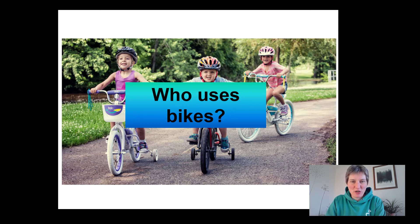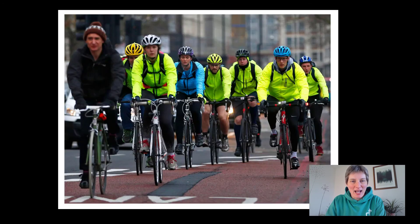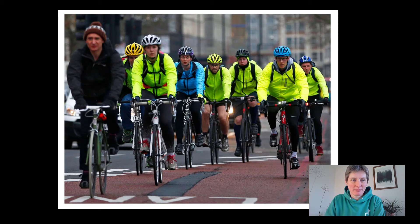But there are lots of other people who use bikes too. There's another group — they have a big name, they're called commuters. A commuter is someone who is travelling to work. You can use different types of transport for commuting — by car, by train, by bus — but lots of people choose to commute by bike, using their bike as a way to travel to work.